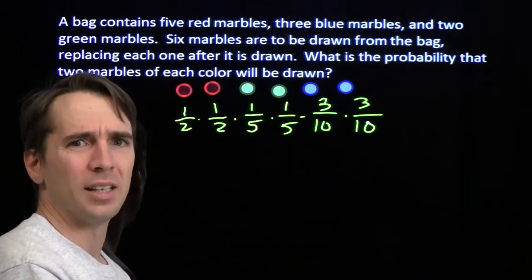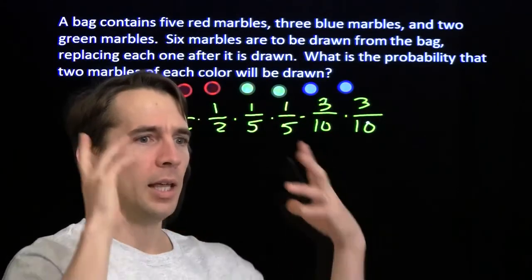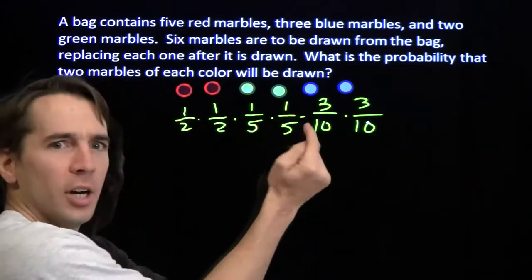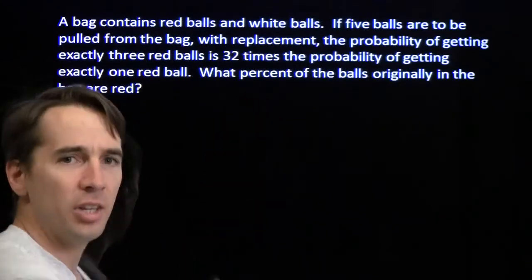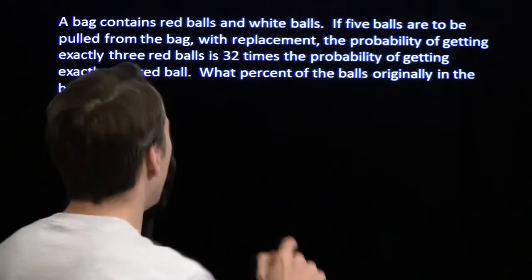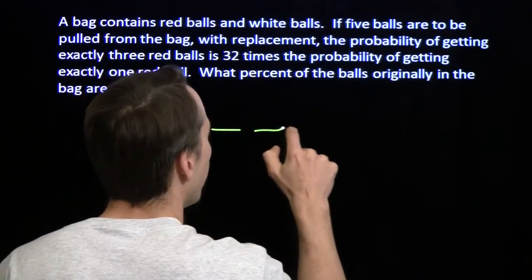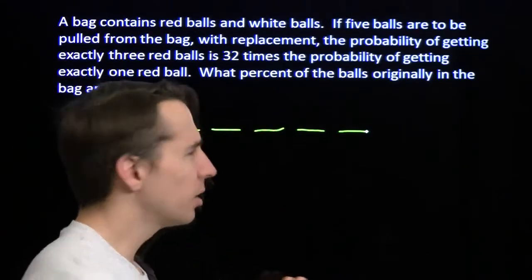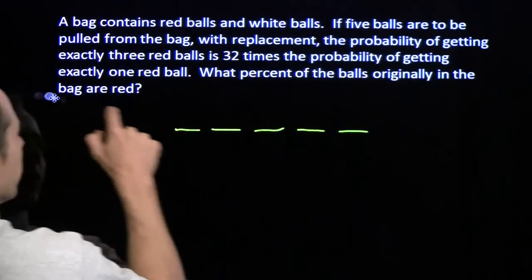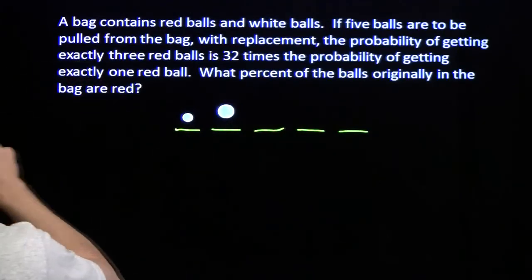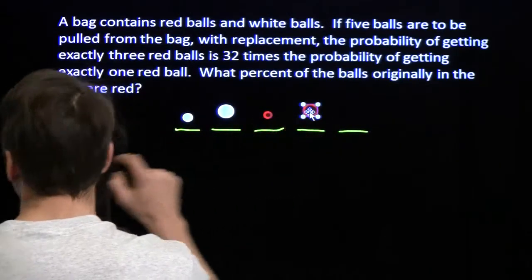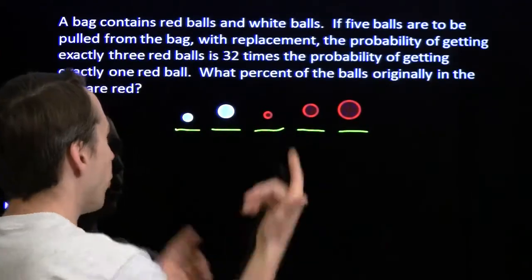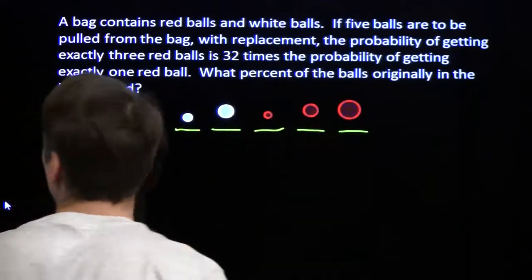When I have a complicated problem like this, I like to think of a simpler version and find a smart way to solve that first. We have a simpler version: the problem we just did with 2 whites and 3 reds. Let's imagine what would happen if the balls were all different — 2 white balls of different sizes and 3 red balls of different sizes. Since all 5 balls are different, there are 5 choices for which ball goes first, 4 for the second, 3 for the third, and so on.